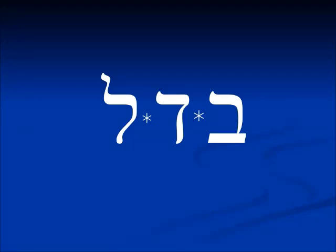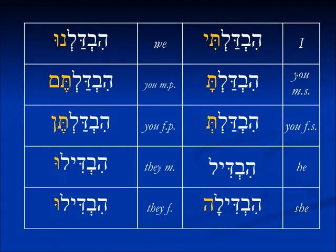The first verb we're going to look at is this root: Badal. In the hifil it means to separate. In the participle presentation of this verb in the hifil, we see that God separated the day from the night in Genesis. So the full conjugation looks like this. In the present tense we see that yud infix in every form: Mavdil, Mavdila, Mavdilim, Mavdilot. But in the past tense, in the perfect tense, we only see that yud infix in the third person — otherwise it disappears. The hifil perfect form will always start with a hey and will always have these same endings.